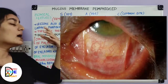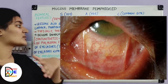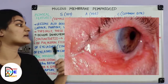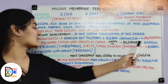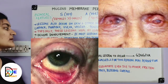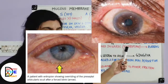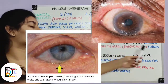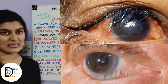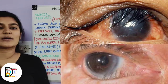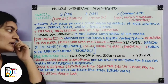Following the conjunctivitis and adhesion between the palpebral and bulbar conjunctiva, there is opacity of the cornea leading to blindness. Additionally, scarring of the eyelashes — known as symblepharon — eyelid turning inward — known as entropion — and rubbing of the eyelashes against the cornea — known as trichiasis — are the three important terms to remember along with blindness as the sequel.